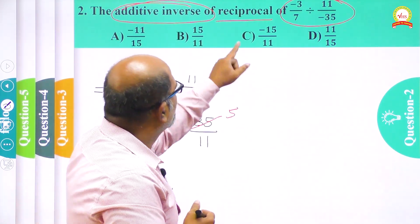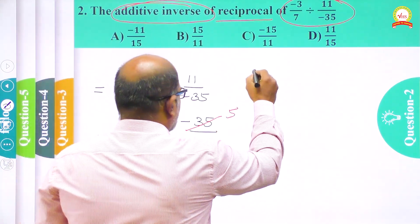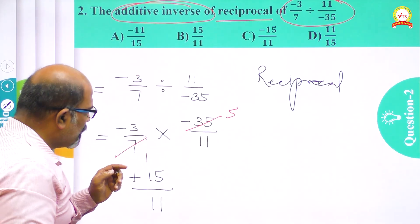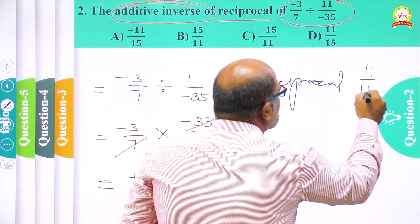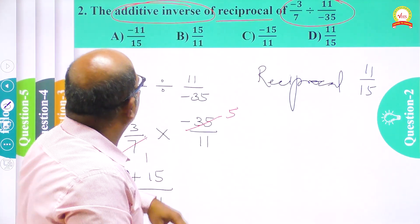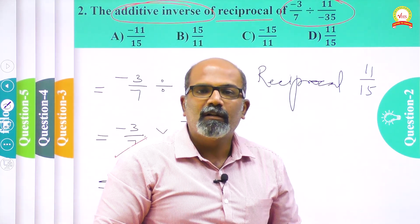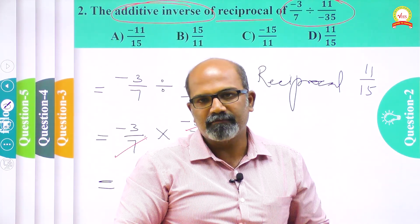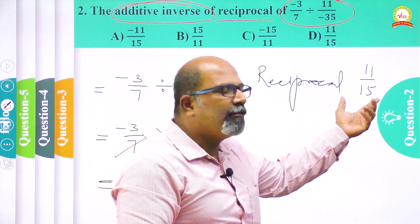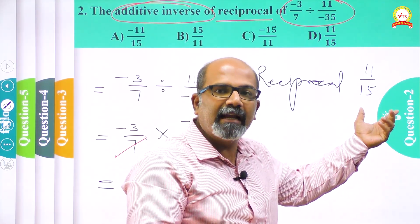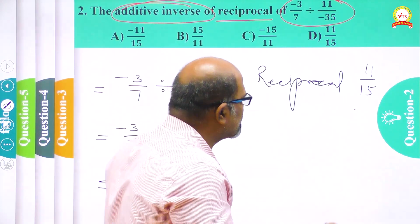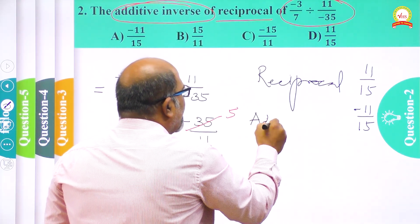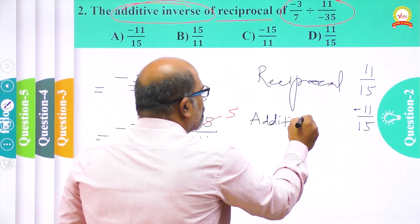What is the second step? Reciprocal. The reciprocal of 15/11 is 11/15. After finding the reciprocal, what I want to find is the additive inverse. As I told you in the introduction session, additive inverse is the negative of the given number. The number we have is 11/15, so the additive inverse is the negative of 11/15, which is minus 11/15.